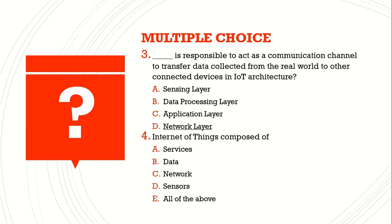Question number four: Internet of Things is composed of — A) services, B) data, C) network, D) sensors, E) all of the above. The answer is E) all of the above.